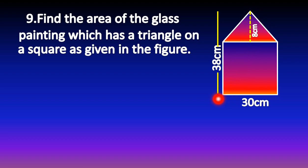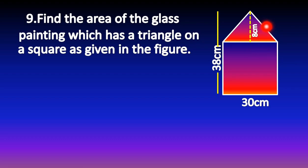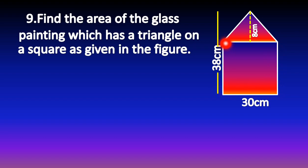The side of the square is 30 cm and the total height is 38 cm. So 38 minus 30 gives you 8 cm — the height of the triangle is 8 cm. And the base of the triangle is 30 cm, because a square has all sides of equal length.